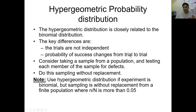More or less, they behave the same. If you calculate the mean and variance of hypergeometric and binomial, the values will not differ too much from one another. But you need to understand that in hypergeometric distribution, the trials are not independent — they are depending on one another. Consider taking a sample from a population and testing each member without replacement.